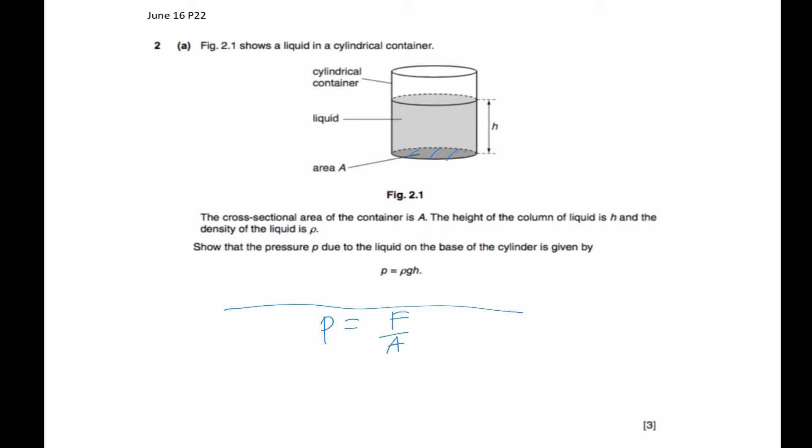You'll say the pressure on area A is due to the weight of the liquid above it, or due to the weight of the column of liquid above it. Then you can start off by using the formula P equals F over A, and your F will be the weight of the liquid. Since the weight is density times volume times g, because m is actually density times volume, then you can break down the volume to area times height and the area at the bottom will cancel. So that's how you get the formula ρgh.